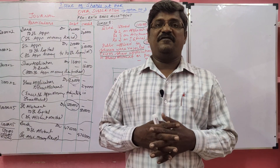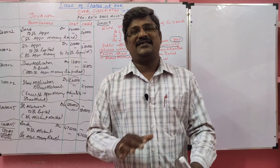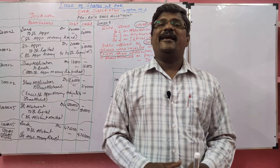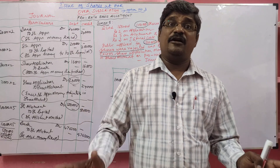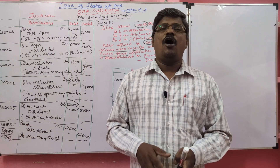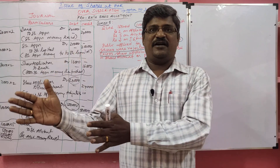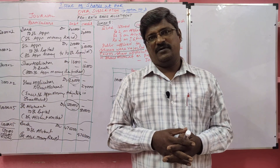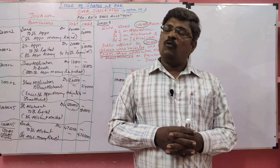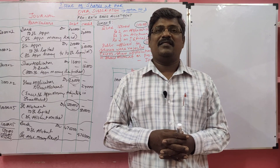Oversubscription: when a company receives more applications than issued shares, that is called oversubscription. Option 1: excess shares are rejected and money is fully refunded. Option 2: excess shares are rejected and money not refunded — fully adjusted towards share allotment, called pro-rata basis allotment. Option 3: excess shares were rejected — partially refunded and partially adjusted towards share allotment. Students, we have successfully completed pro-rata basis allotment. Tomorrow we will learn one more problem relating to pro-rata basis allotment. Bye and thank you.